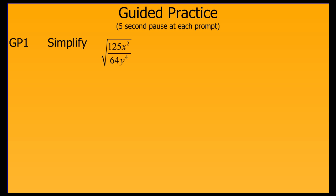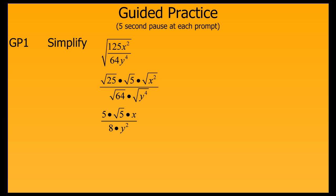Our first question is: what are we trying to do here? What we're trying to do is simplify this radical expression. How do we do that? First, we use our quotient property and product property to split this into radicands we know how to simplify. Now we simplify those radicands: the square root of 25 becomes 5, the square root of x squared becomes x, the square root of 64 becomes 8, and the square root of y to the fourth becomes y squared. We typically write all the numbers outside the radical in the front, so we rewrite this as 5x root 5 divided by 8y squared. We're done.